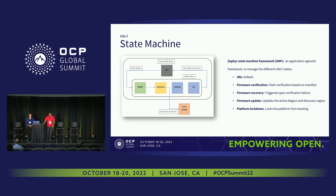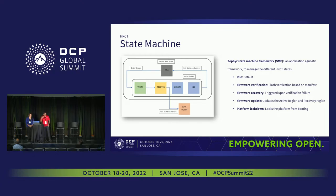Talking about the HRoT state machine: typically when you power on, the hardware root of trust is the first to get power. It initializes its components, accesses the SPI, and performs the integrity check of BIOS and BMC SPI — that is the verify phase. If corruption is found, it goes into the recovery phase and re-verifies. If both active and recovery are not good, it goes to lockdown — it's better to shut down the server than to execute with a vulnerability.